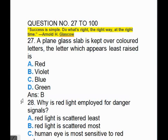A plain glass slab is kept over colored letters. The letter which appears least raised is? The answer is B, violet. Why is red light employed for danger signals? The answer is A, red light is scattered least.